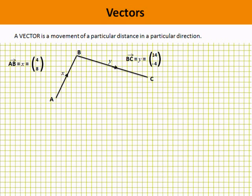Don't mix vectors up with fractions. The 4, 8 and the 14, minus 4 are not fractions, so you can't simplify 4, 8 to a half. Just because it's got one number on top of the other doesn't make it a fraction.